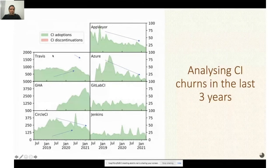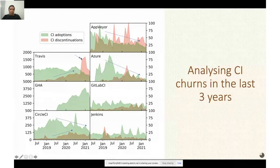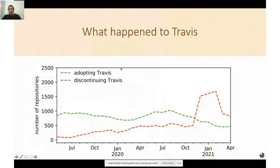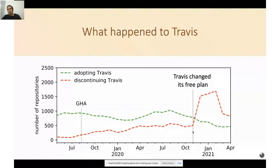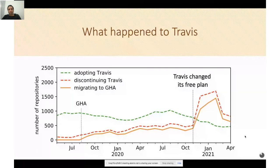In this figure, we observed a strange peak. It occurred long after the introduction of Actions, so we decided to analyze it. We observed the number of adoptions and discontinuations of Travis. Although after the introduction of GitHub Actions the number of discontinuations was increasing, something strange was happening here. We found in GitHub news and blogs that at this date, Travis changed its free plan. We noticed a lot of discontinuations happened after this date and that most of them were migrating to GitHub Actions.